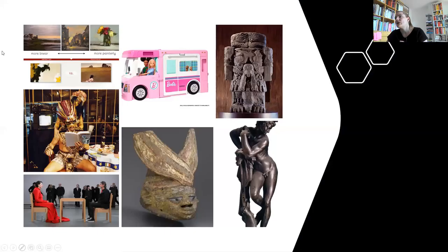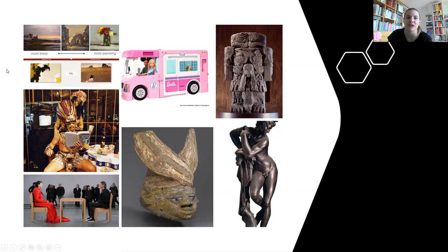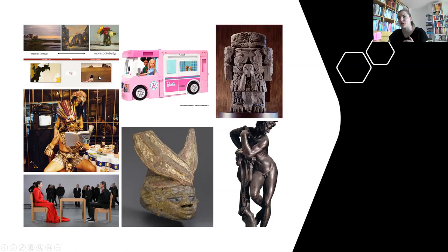We also went through a lot of visual material here — images showing the formal distinction between paintings that are more linear versus more painterly, more abstract versus more figurative. And then a couple of artworks, performances, and objects where we discussed formal and contextual analysis, the importance of knowing the context, performance art, and related topics.